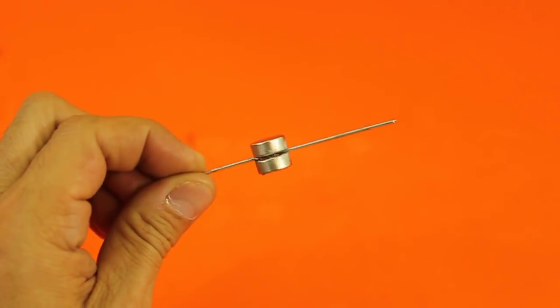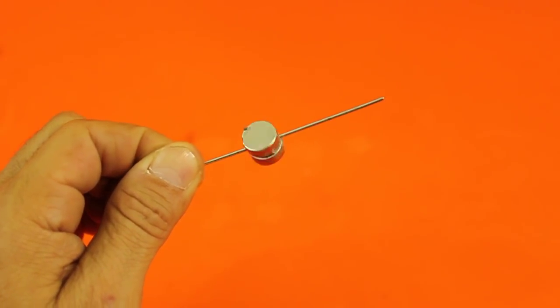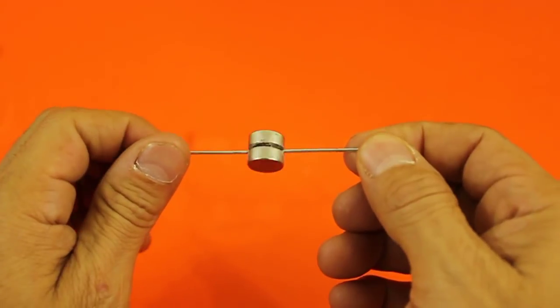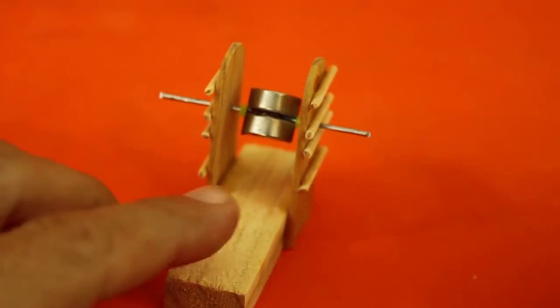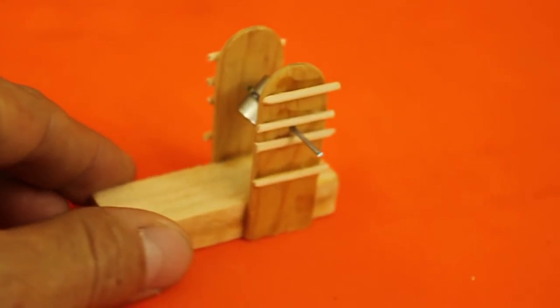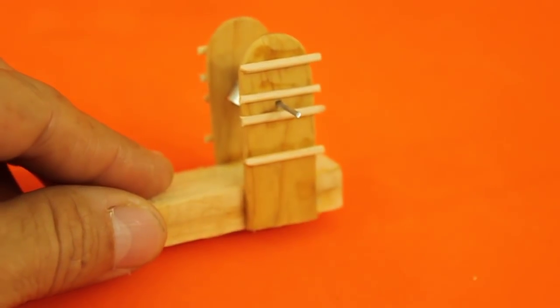The first thing we make is the rotor. The axis is made with the wire from the paper clip and the two magnets are centered on the axis. The rotor can move freely on this base that we made with the Jenga block, the wood sticks and the toothpicks.